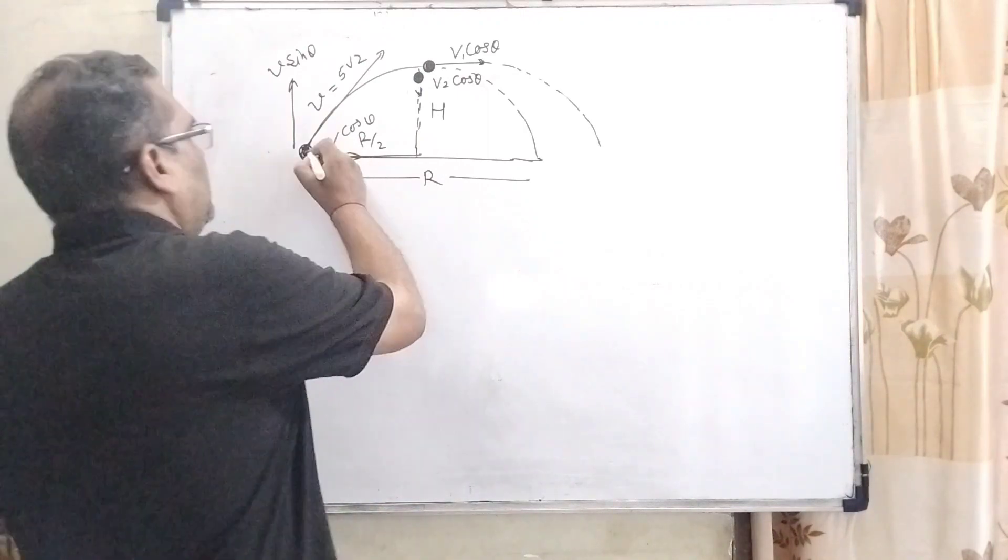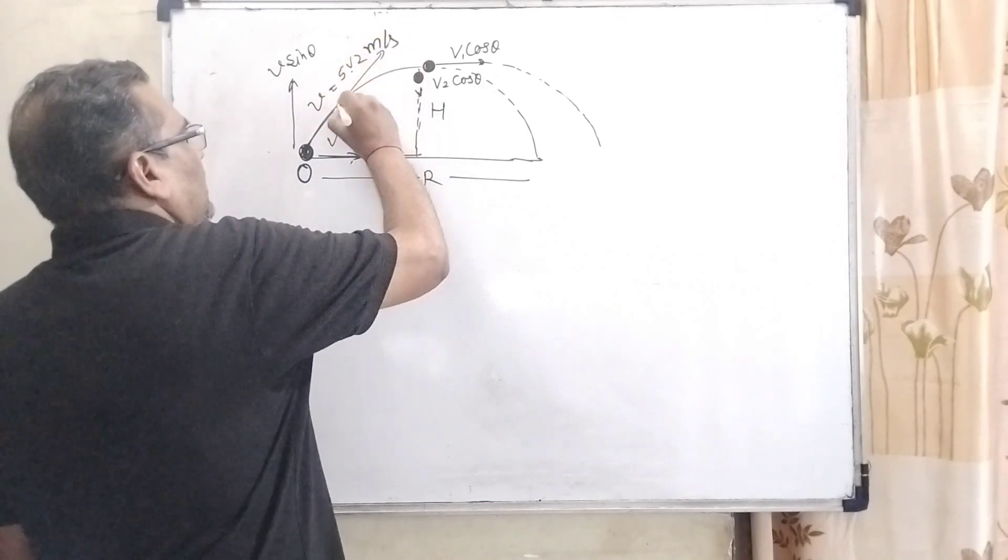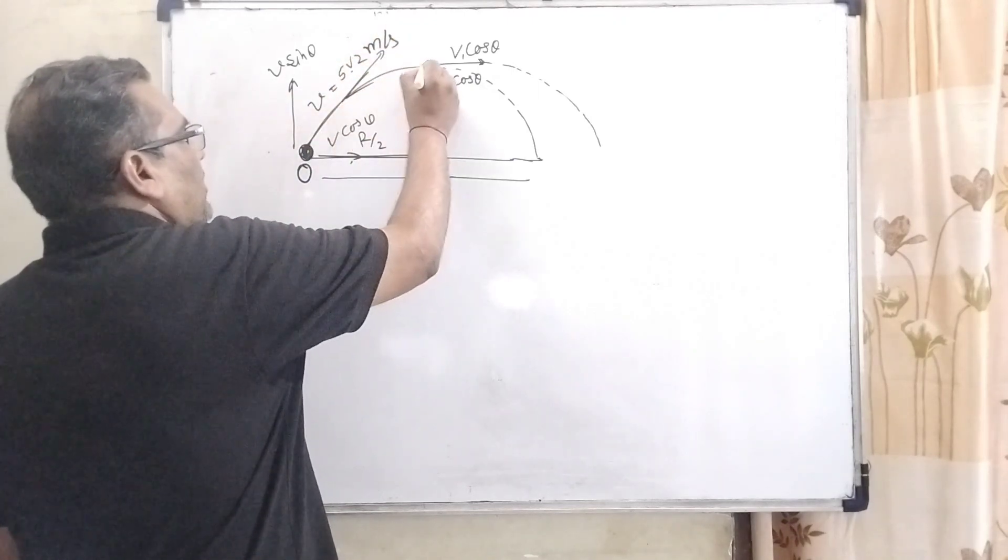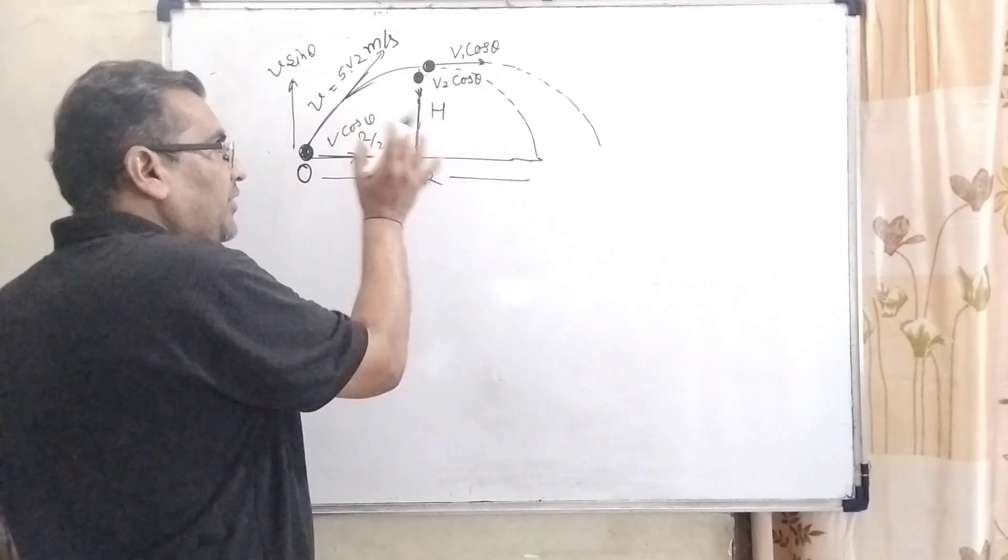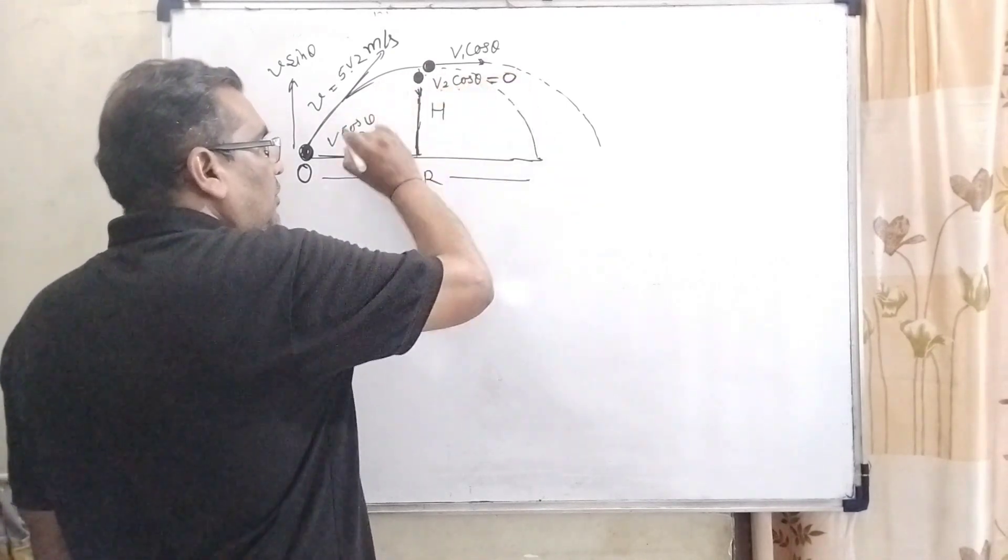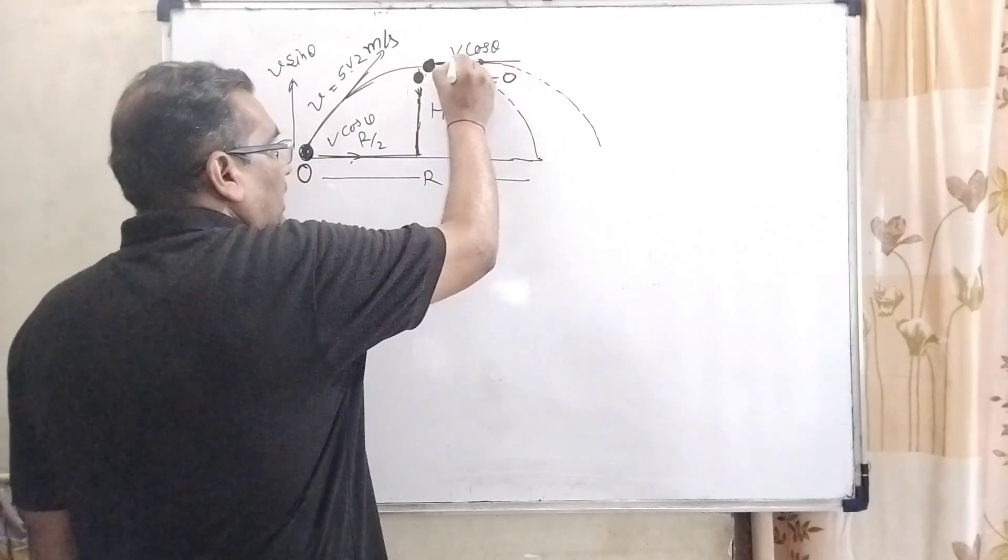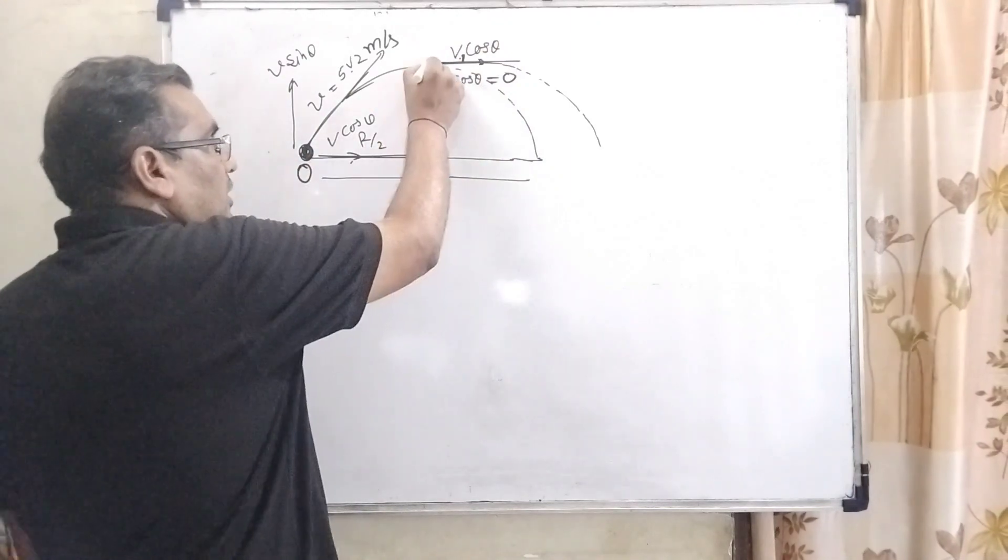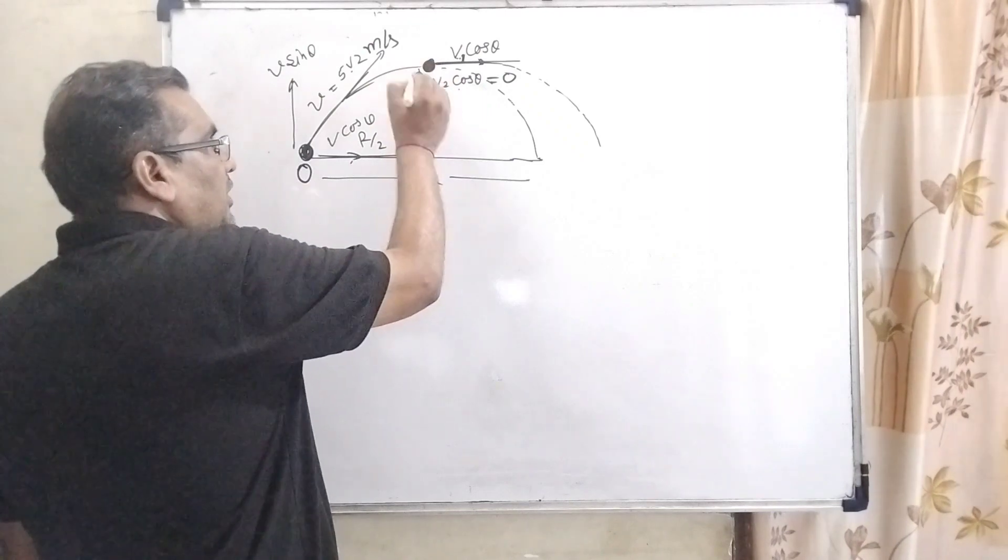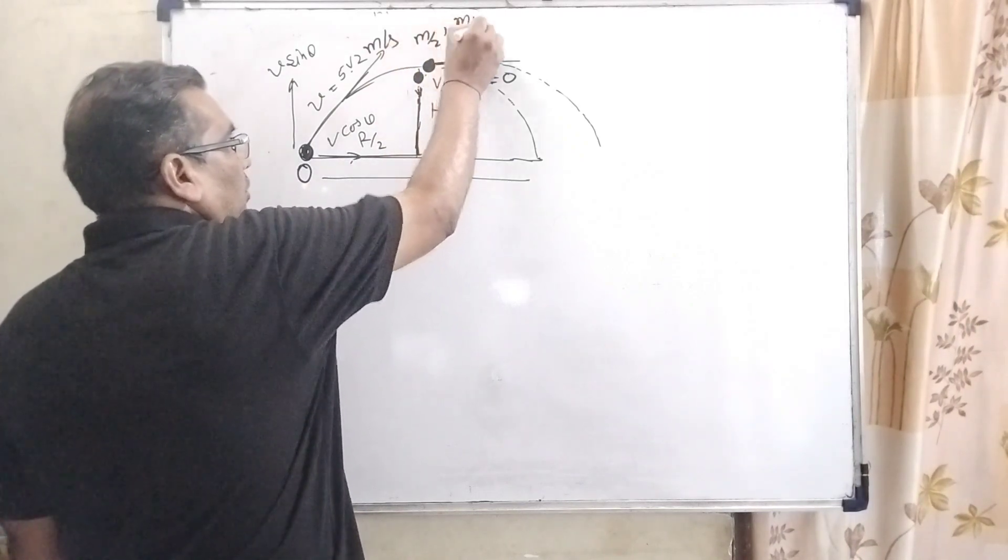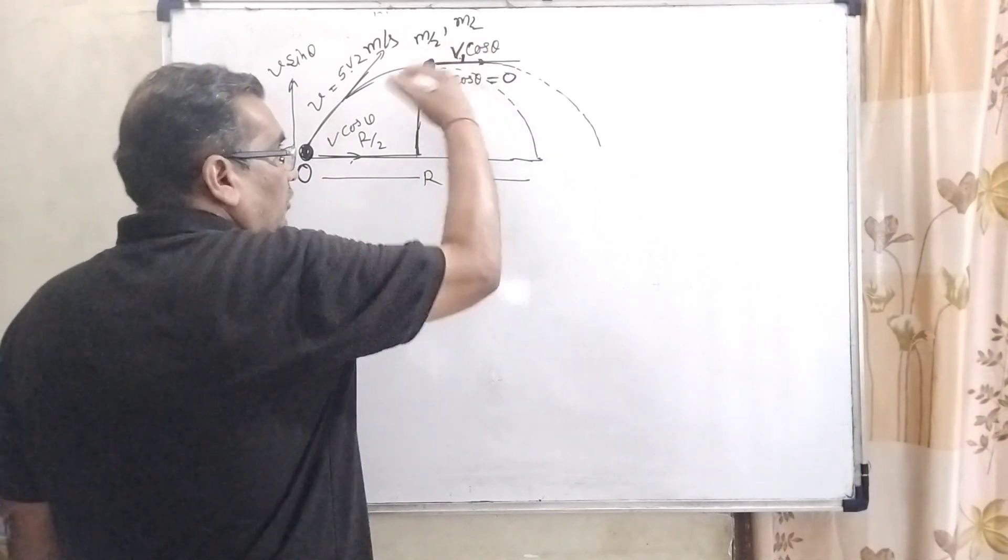For students, you can see here according to the diagram that this object starts from O with a speed of 5√2 m/s. And at the moment where it reaches maximum height, it splits in two parts. One part falls downward means free fall, so V2 cos θ becomes 0. And V1 cos θ means one part reaches at the speed of V1 cos θ. Here the mass is reduced because it's splitting into equal parts, m/2, m/2. So here the weight decreases and therefore velocities increase.